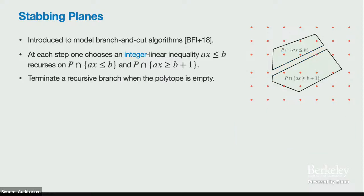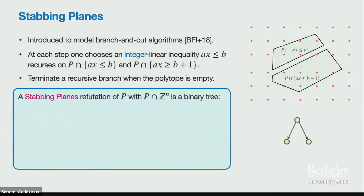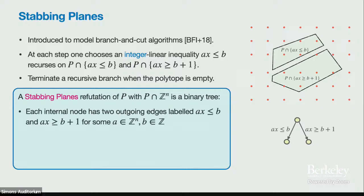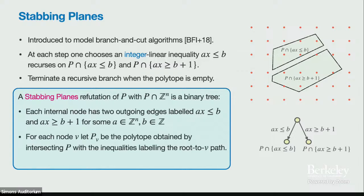We get two polytopes and recurse, continuing until each polytope is certified empty. Formally, a stabbing planes refutation of a polytope is a binary tree where each node has a linear form ax with two outgoing edges labeled ax ≥ B+1 and ax ≤ B. We associate with each node the polytope formed by intersecting the initial polytope P with all inequalities along the path from root to that node.